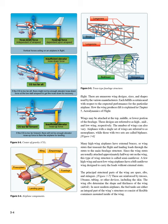The spars, ribs, and stringers are reinforced by trusses, I-beams, tubing, or other devices including the skin. The wing ribs determine the shape and thickness of the wing airfoil. In most modern airplanes, the fuel tanks are either an integral part of the wing's structure or consist of flexible containers mounted inside of the wing.